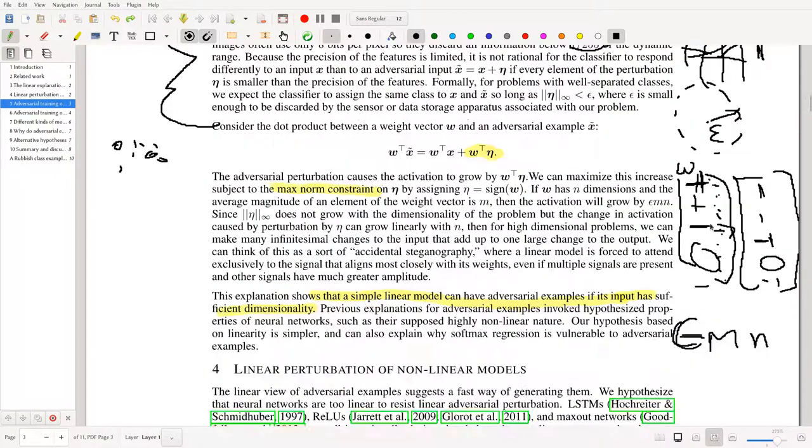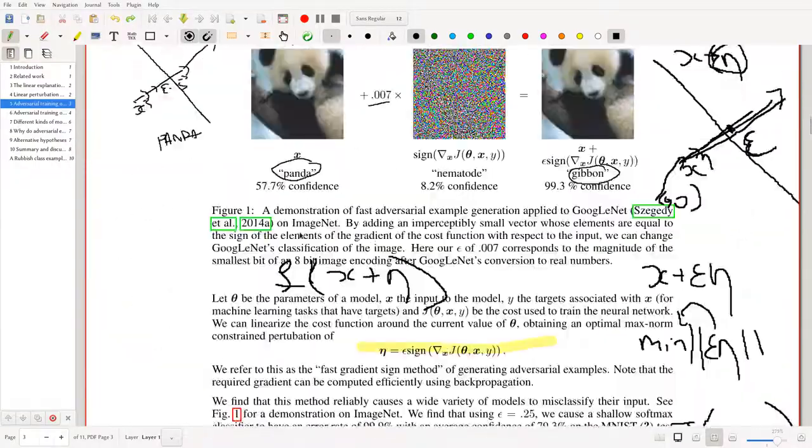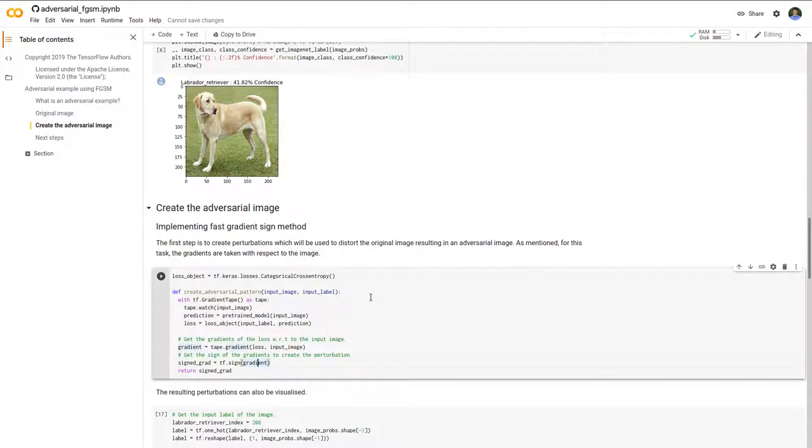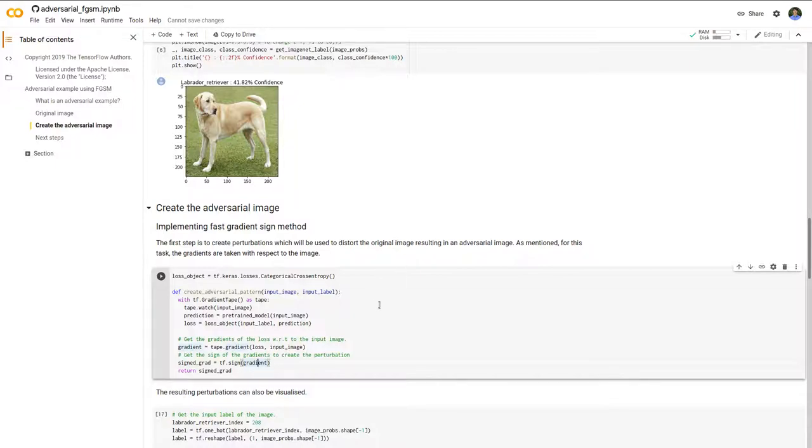The sign is just a function which, if you have a vector like positive, positive, negative, zero, it just maps it to one, one, negative one, zero—so it takes the element-wise sign of each element.